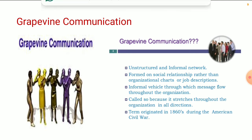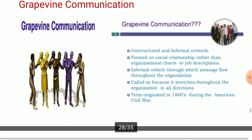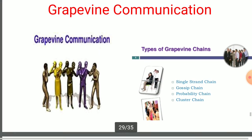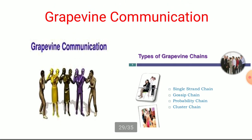After knowing the concept of grapevine communication, we are going to talk about the different chains of grapevine communication. Basically, there are four chains of grapevine communication. Those four types are: single strand chain, gossip chain, probability chain, and cluster chain. These are the four different types of grapevine chains used in every business organization.